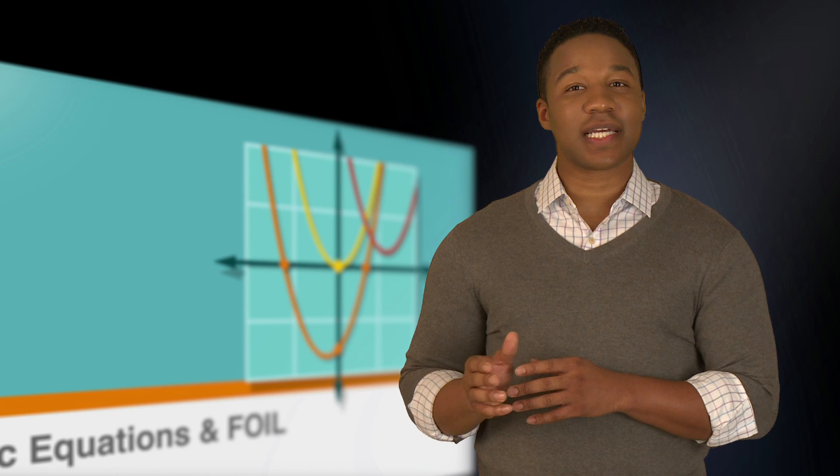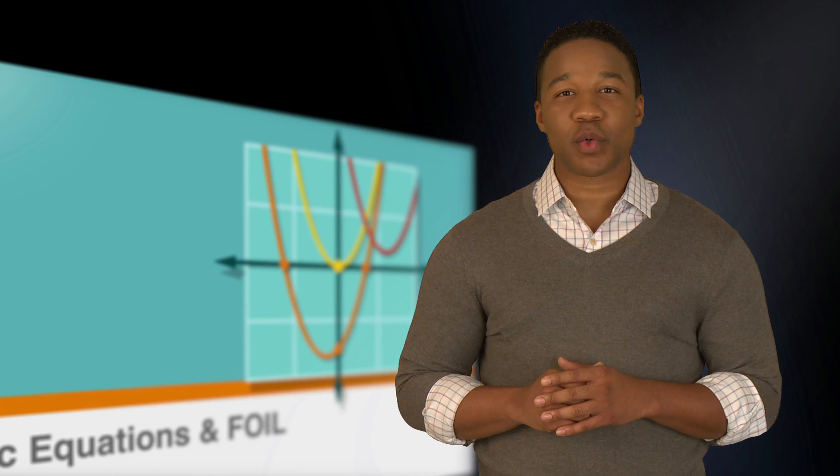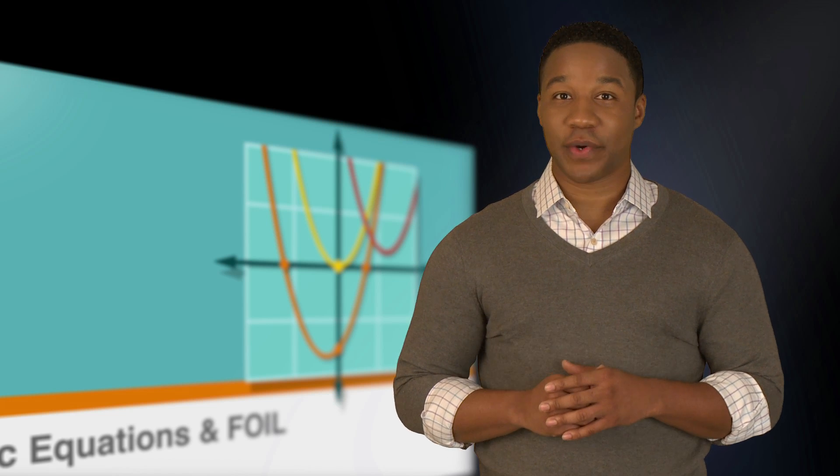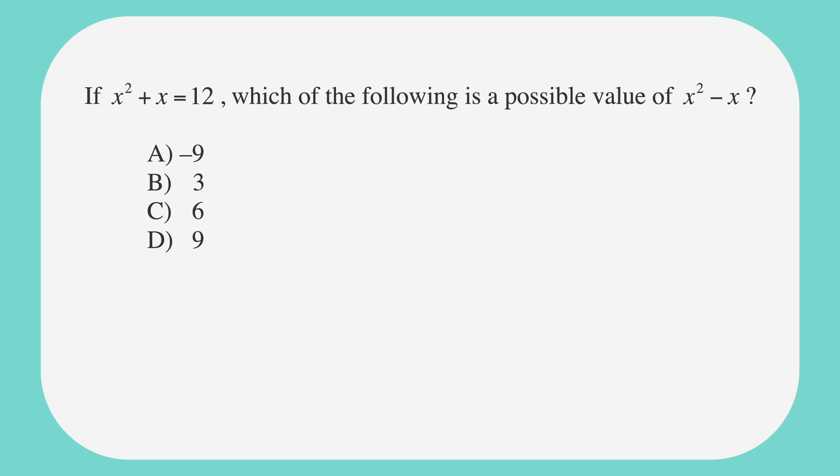Now that we've reviewed FOILing, let's look at an SAT problem that requires us to factor a quadratic equation. If x² plus x equals 12, which of the following is a possible value of x² minus x? Our answer choices are a, negative 9, b, 3, c, 6, and d, 9. We'll underline the facts, circle the keywords, and label the answer choices.